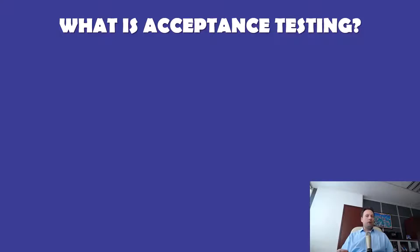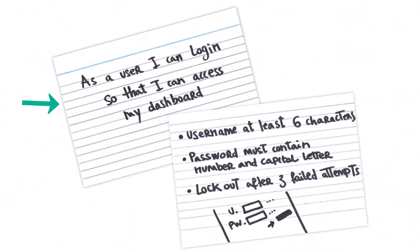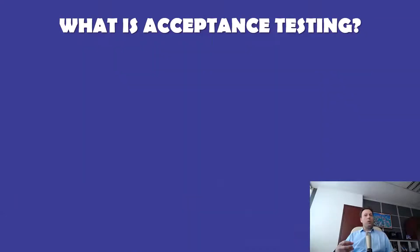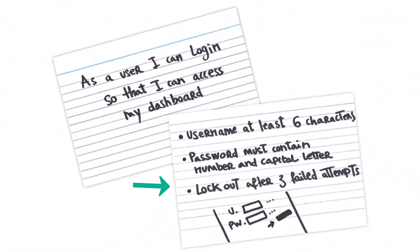Since user stories should be testable, that must mean that there are tests for user stories. Remember how a user story is compact enough to be written on one side of an index card? Not only does that keep your user story short and to the point, but it also allows you to write tests for each story on the back of that index card.